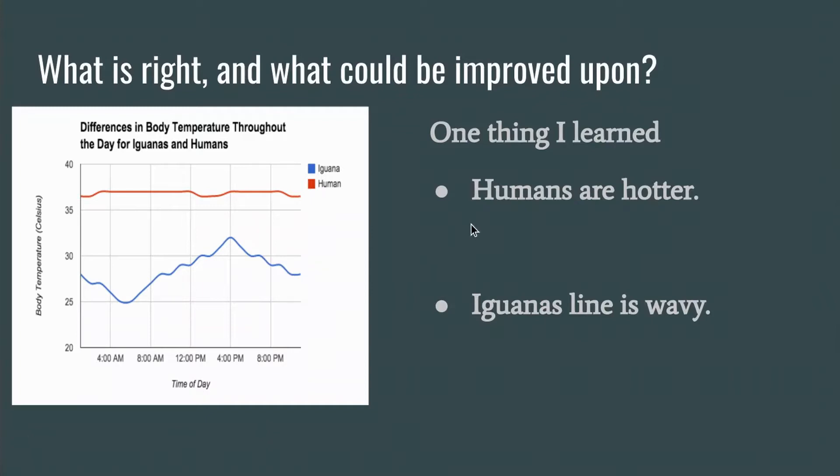So here's two level one answers. Humans are hotter. This doesn't even say humans are hotter than what. You could have at least, or an example could have at least said humans are hotter than iguanas. Or another level one answer is that iguanas line is wavy. That's true, but what does the waviness in that line represent? So the waviness represents that the body temperature is changing in the iguanas. And again, we want to make some sort of analysis on this.